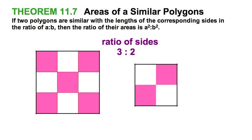Let's make a quick visualization for the areas of similar polygons theorem. I'm going to use squares because it's just so easy to understand.